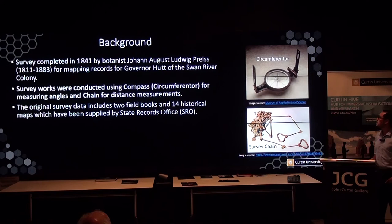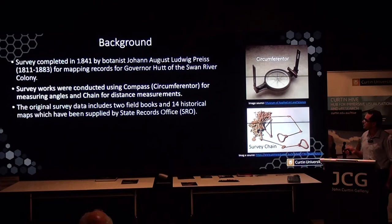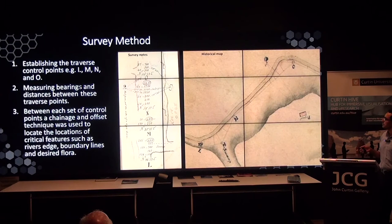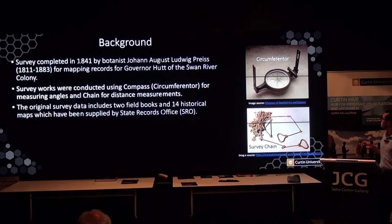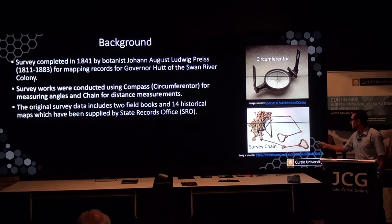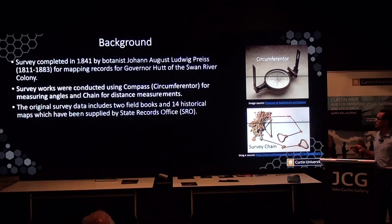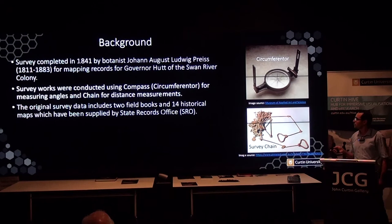As background for the survey work done around 180 years ago, it was carried out by John Bress Price for mapping the record of Governor Hart for the Swan River Colony. The tools used were a compass for measuring direction or bearing, and a survey chain for measuring distances. The available survey data includes two field books and 14 historical maps, all supported by the State Records Office.